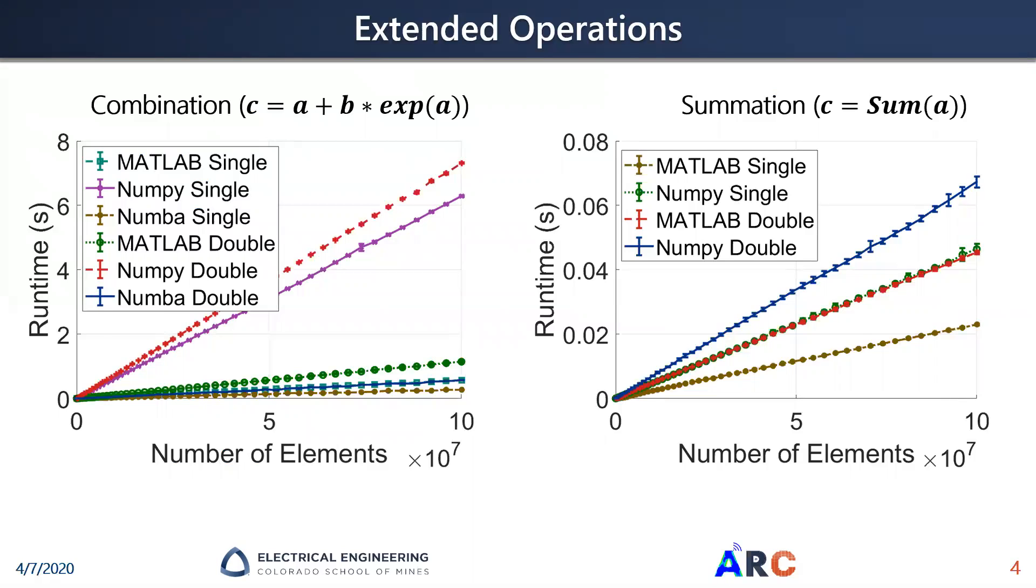From there, we can move to extended operations. This includes a combination of operations where we have an exponentiation, addition, and a multiplication. Here again, we see that Numba is actually faster than MATLAB for this combination, but NumPy is, again, much slower than both of the two libraries.